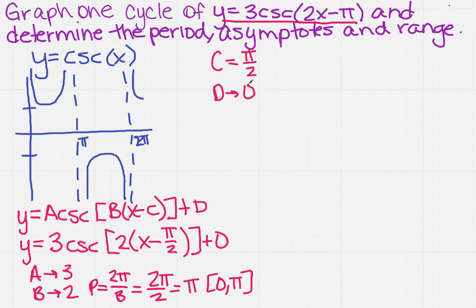Now, where in the world is the asymptote? So remember, the asymptotes for cosecant are found at x equals k, and then whatever your c value is, which is pi over 2.